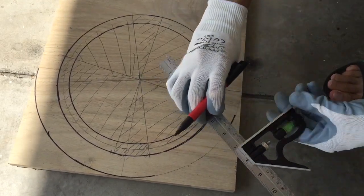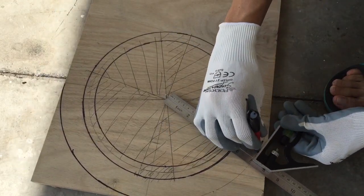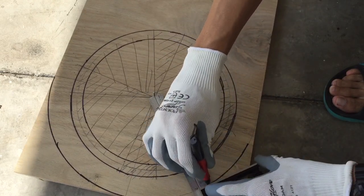This can be done quite easily even without a compass by using a square ruler.